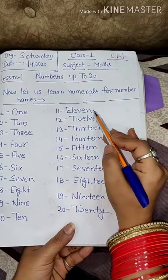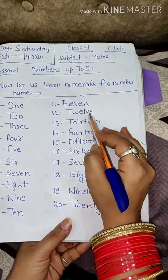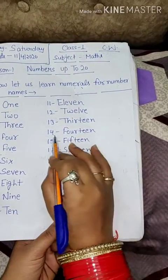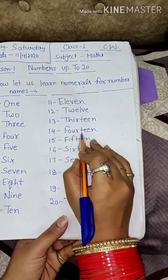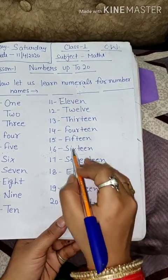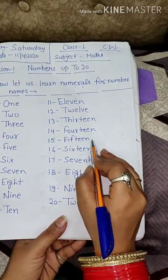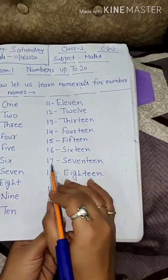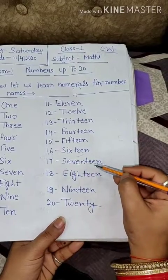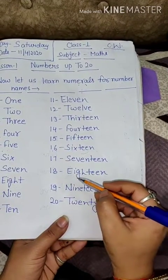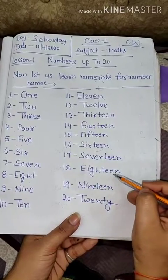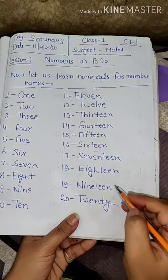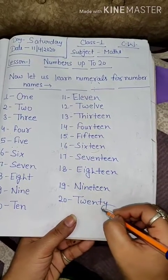11 — ELEVEN. 12 — TWELVE. 13 — THIRTEEN. 14 — FOURTEEN. 15 — FIFTEEN. 16 — SIXTEEN. 17 — SEVENTEEN. 18 — EIGHTEEN. 19 — NINETEEN. 20 — TWENTY.